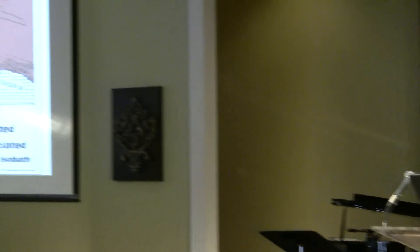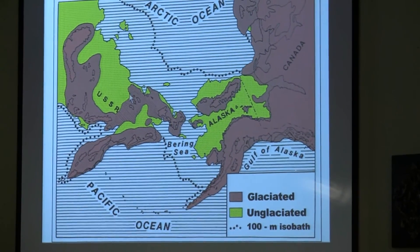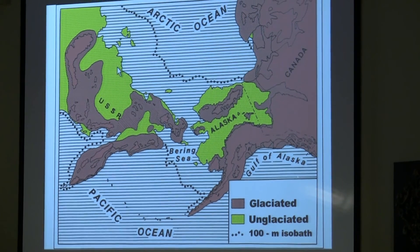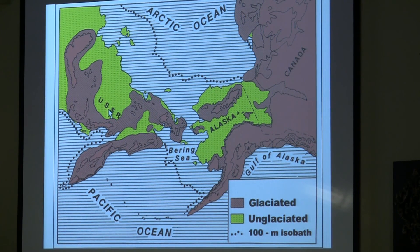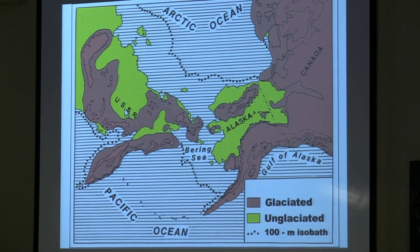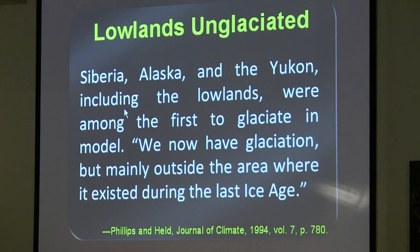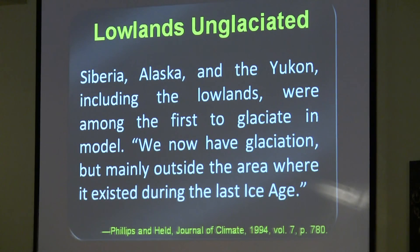Why were only the mountains of Alaska, Siberia, and the Yukon Territory glaciated — while the lowlands were not? That's a major mystery. When scientists run climate models, it's very hard to produce an ice age even with tweaking. When they do manage it, glaciation ends up in the wrong spot. The Journal of Climate noted that researchers found glaciation mainly outside the area where it actually existed during the last ice age. It's because they have the wrong model.